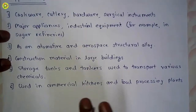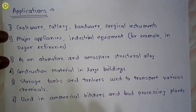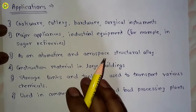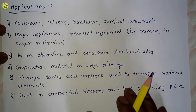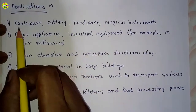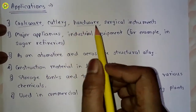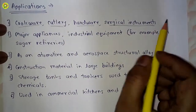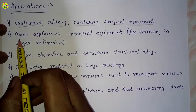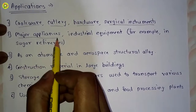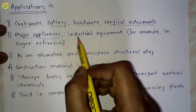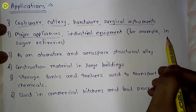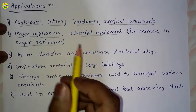Applications of stainless steel include cookware, cutlery, hardware, and surgical instruments. It is also used in major appliances and industrial equipment, for example in sugar refineries.